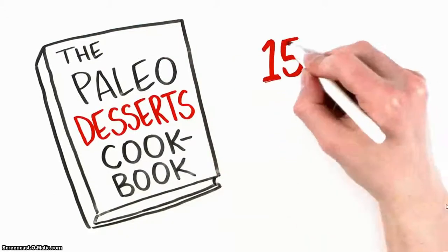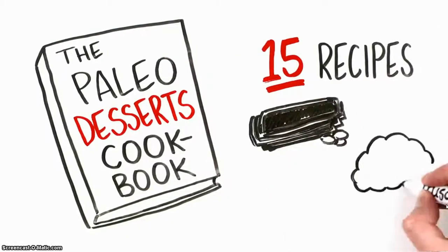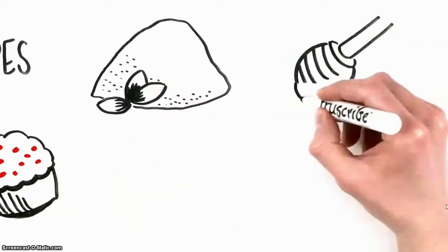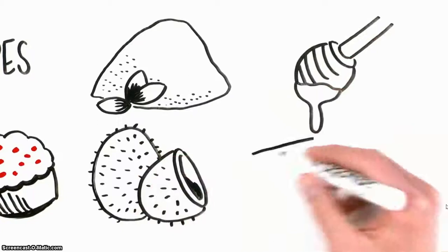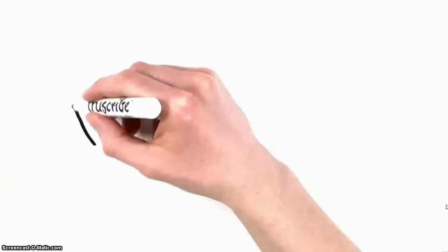Finally, we'll throw in the Paleo Desserts Cookbook to sweeten the deal: 15 mouthwatering dessert recipes like dark chocolate almond bark, cranberry muffins, apple dumplings made from natural ingredients like almond flour, raw honey, and coconut oil. That's four books worth of additional deliciousness for free.